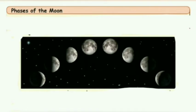On the night when we see the moon in its complete form, we call it the full moon. It is also called Pournami. On the night when we cannot see the moon at all, even when the sky is clear, it is called the new moon.